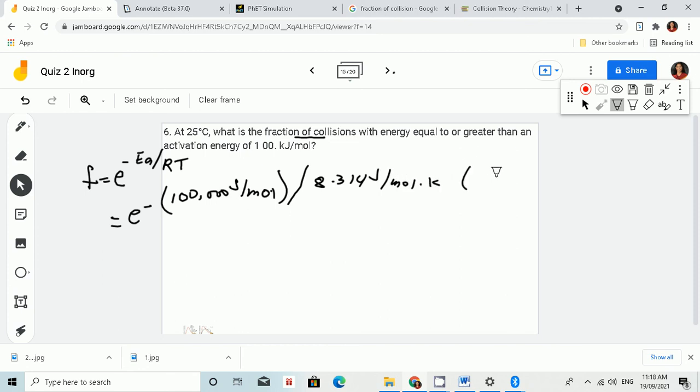And multiply by T. T is at 25 degrees Celsius, so in Kelvin, that is 298.15 Kelvin. We can cancel the Kelvin units.